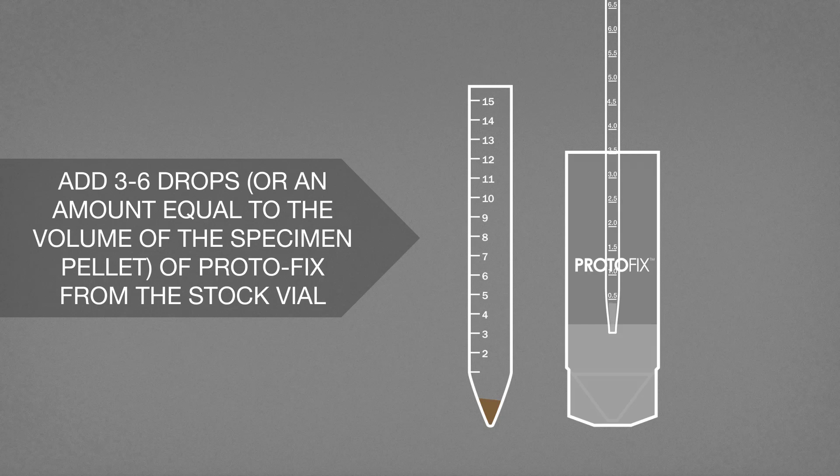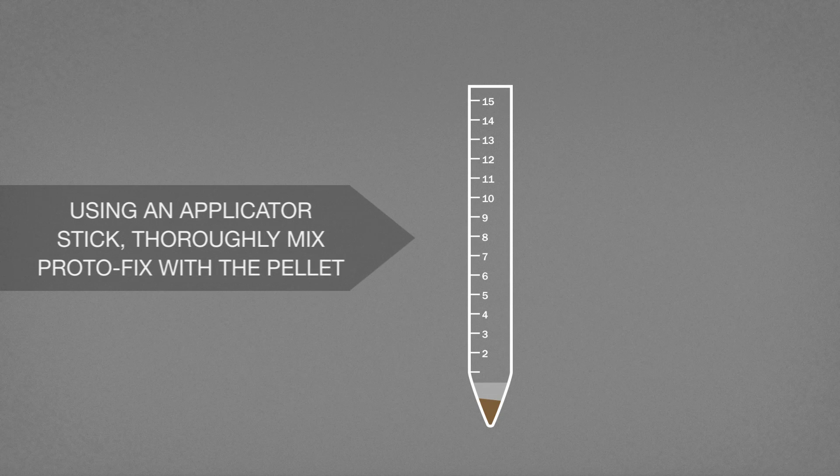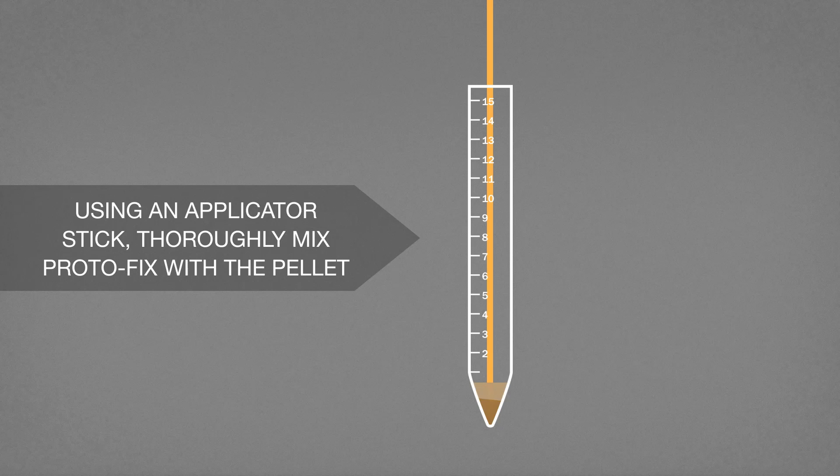Add three to six drops, or an equal amount to the volume of the specimen pellet, of Protofix from the stock vial. Using an applicator stick, thoroughly mix Protofix with the pellet.